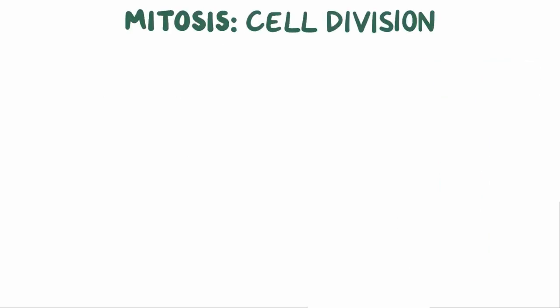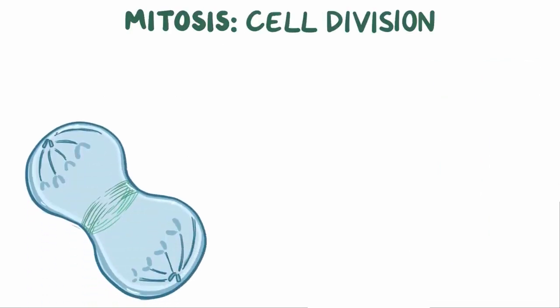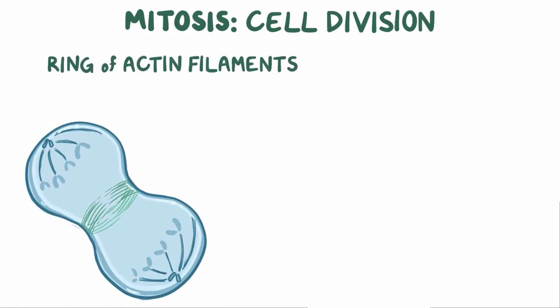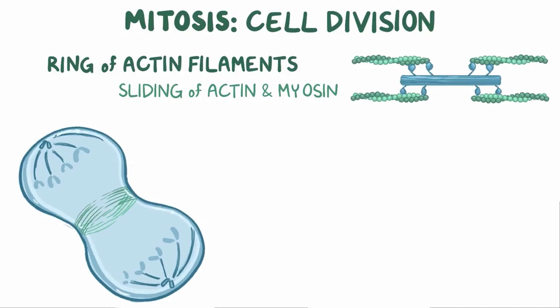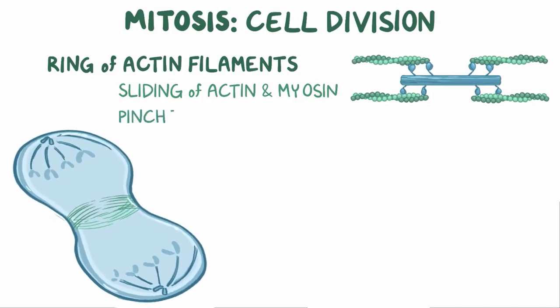Actin filaments also play a role in mitosis, or cell division. At the end of mitosis, the cell has two sets of chromosomes that each sit in their own nucleus. A ring of actin filaments then forms around the center of the cell between the two nuclei. This ring uses the sliding movement of actin and myosin to help constrict or squeeze the cell so that it pinches off into two new cells.